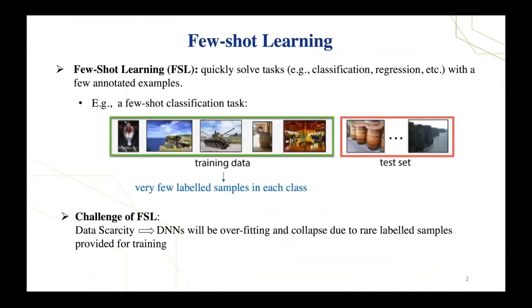The key challenge is that in the data scarcity scenario of few-shot learning, the deep neural network will suffer from model overfitting or collapse due to few labeled examples provided for training.